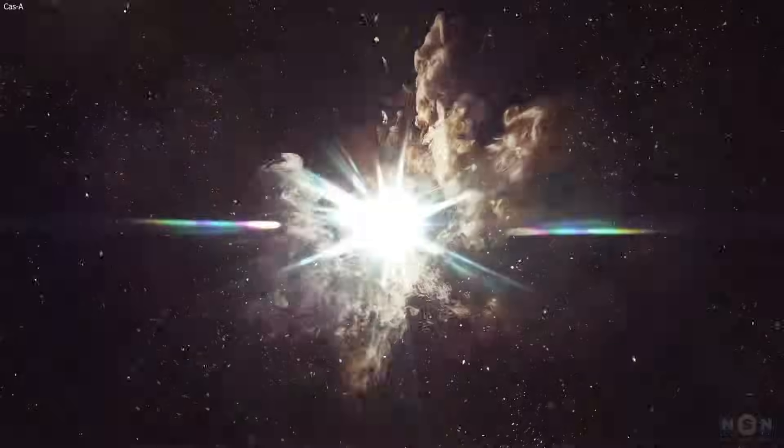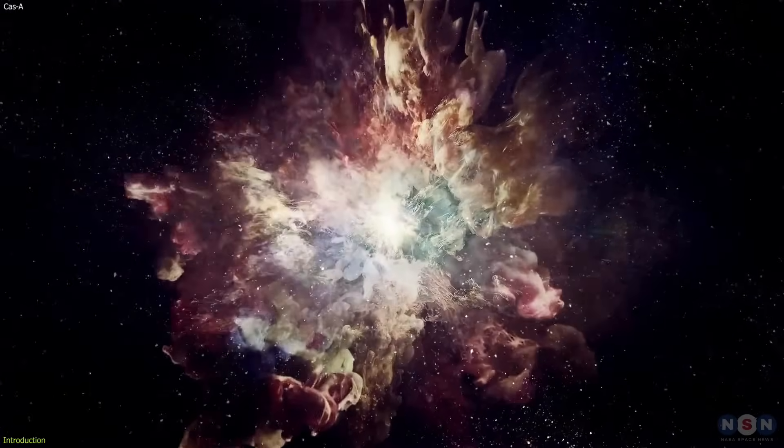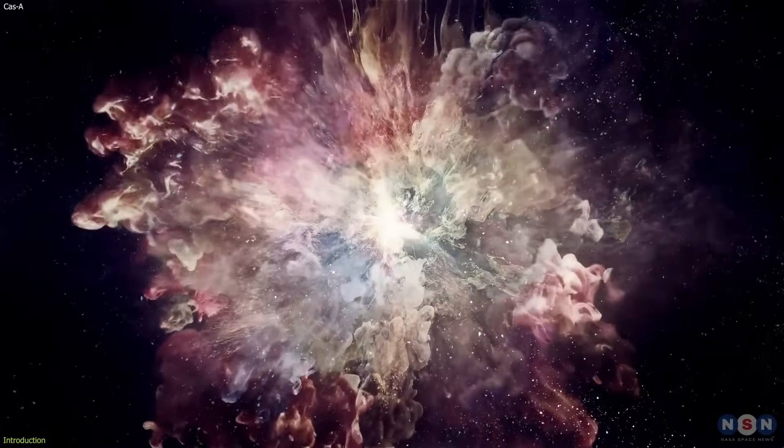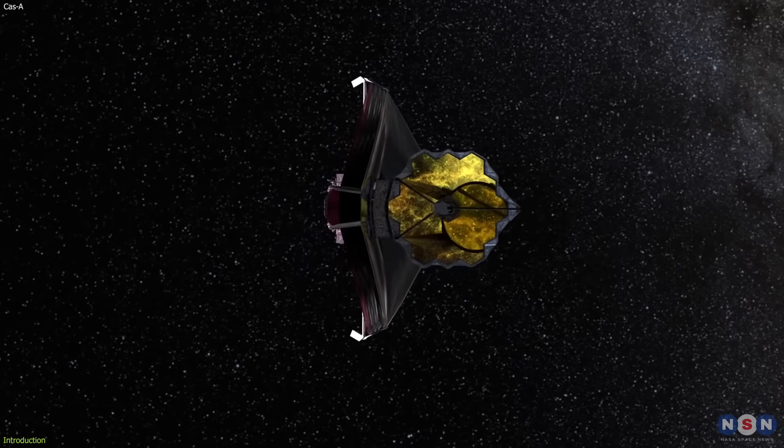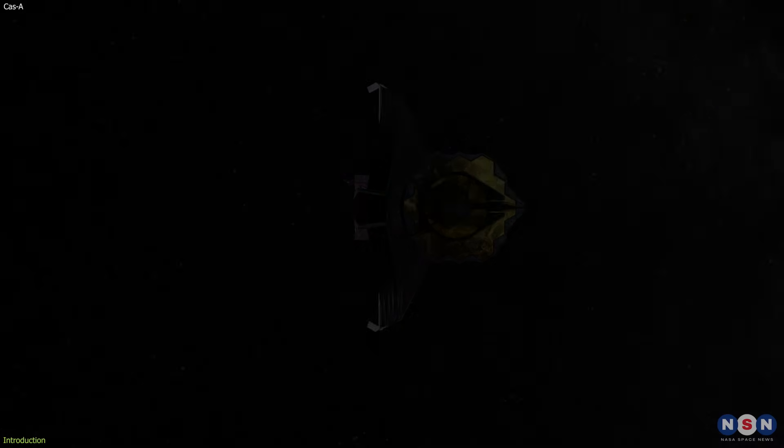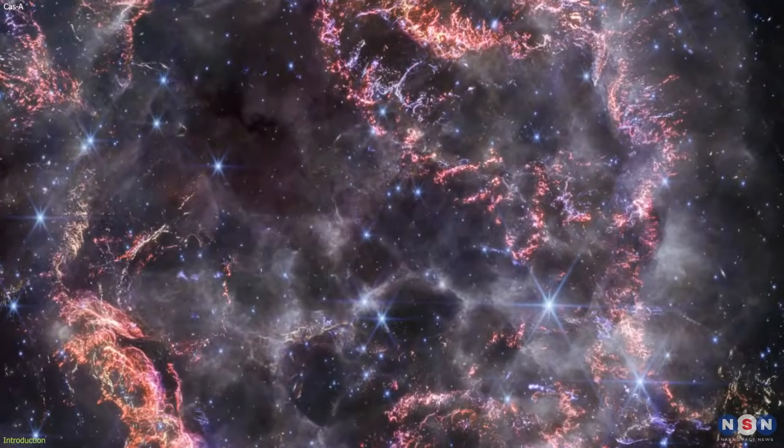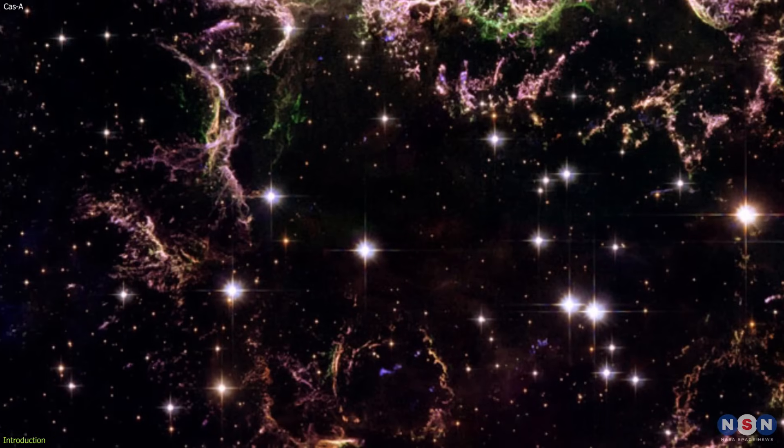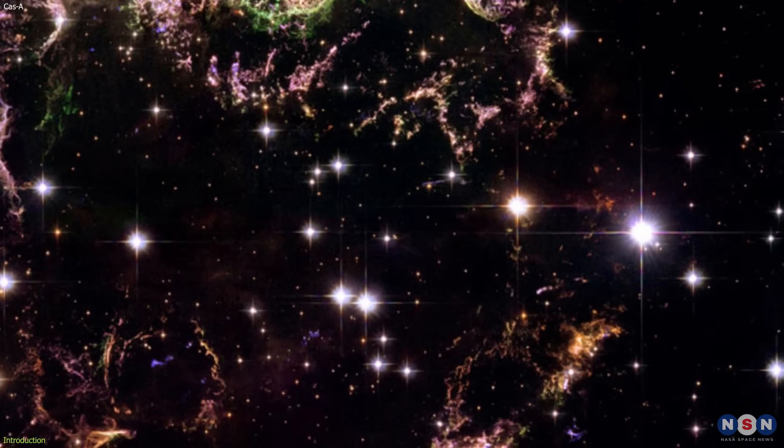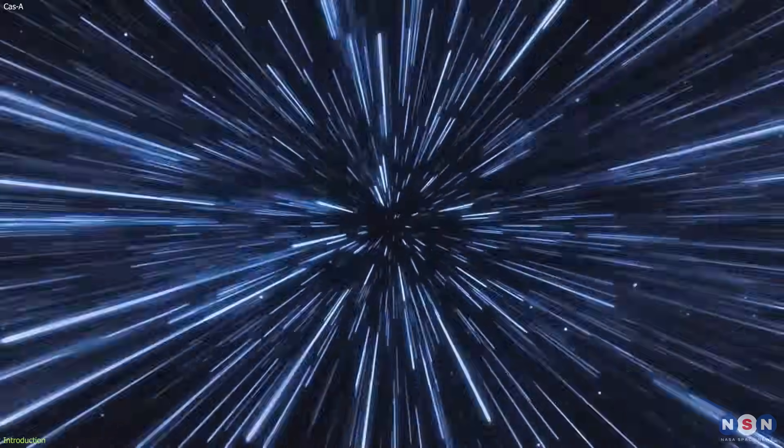Now we can see the aftermath of a star that exploded over 300 years ago in stunning detail and color. That's exactly what the James Webb Space Telescope did when it captured a new image of Cassiopeia A, a supernova remnant that is about 10 light years wide and 10,000 light years away from us.